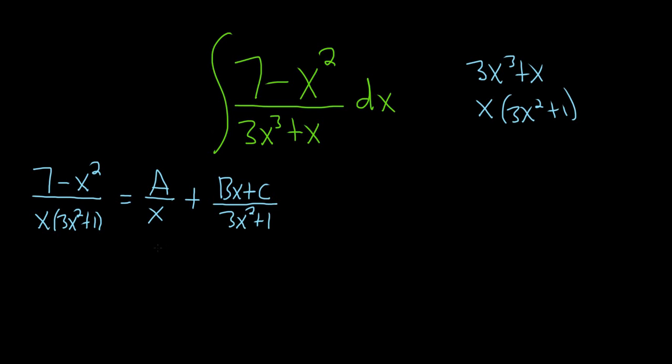Okay so now we're going to clear the fractions. So to clear the fractions we're basically going to multiply both sides by the denominator of the left hand side. So I'm going to squeeze it in over here: x times 3x squared plus 1. On the left hand side we just get 7 minus x squared. So that part's easy because all of that goes away.